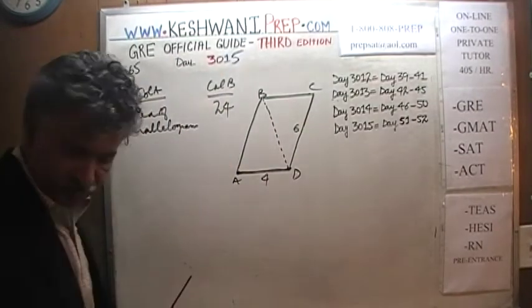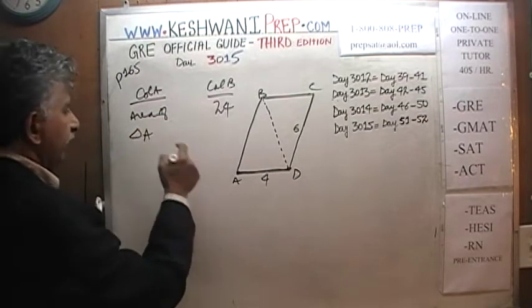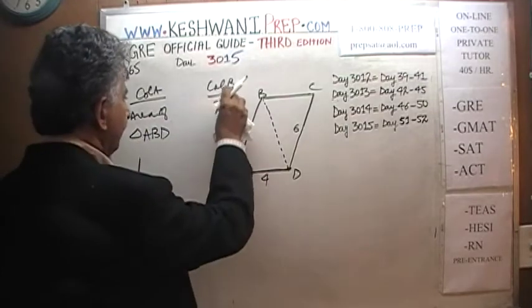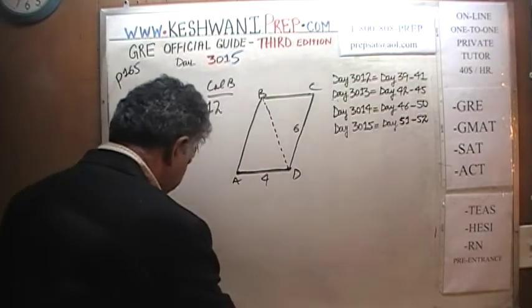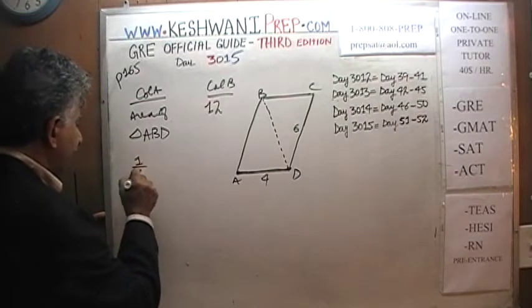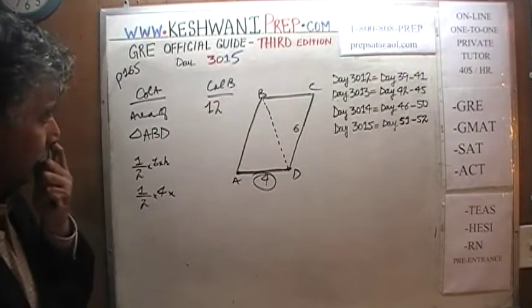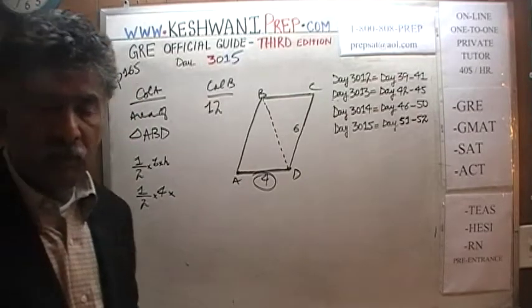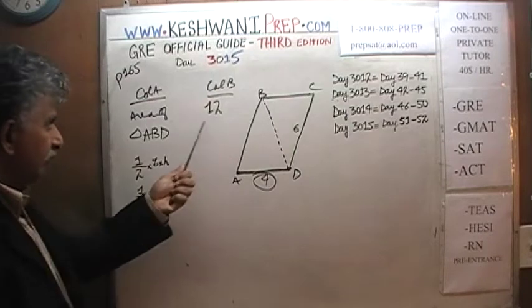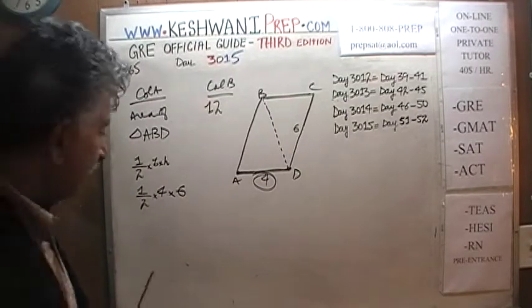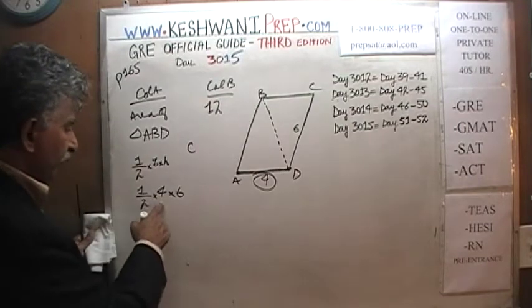Let's change the problem to: area of triangle ABD versus 12. We know the area of a triangle is one-half base times height. The base is 4, but the height is not given. The first type of person who gets this wrong puts 6 as the height and says the two quantities are equal — answer C — because one-half of 24 is 12.